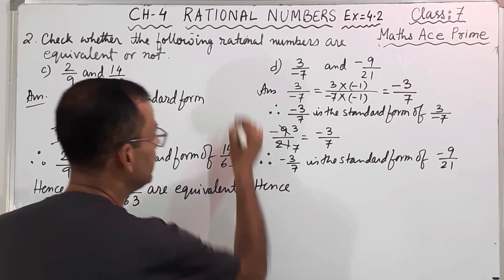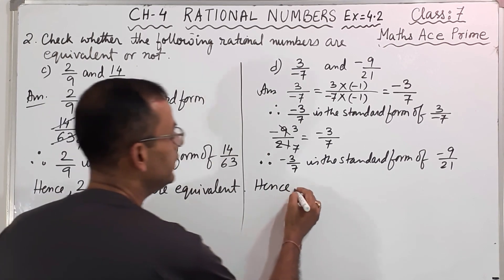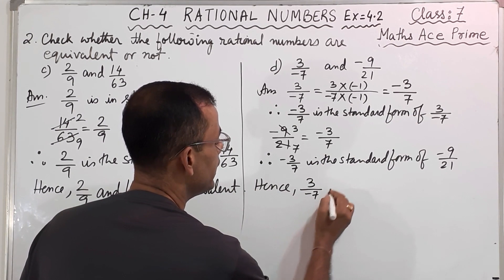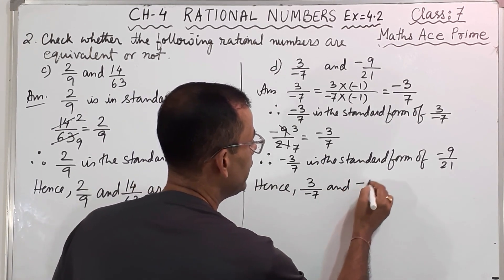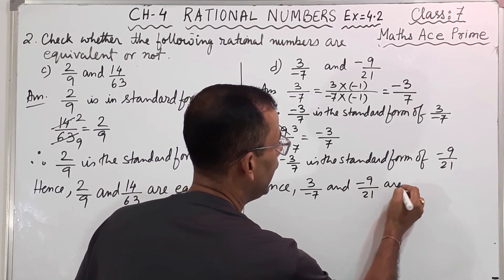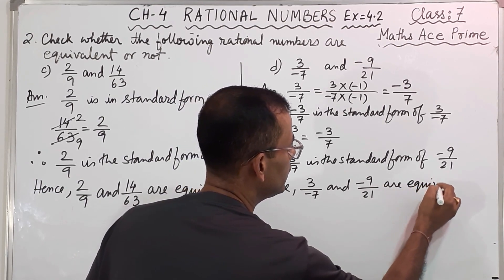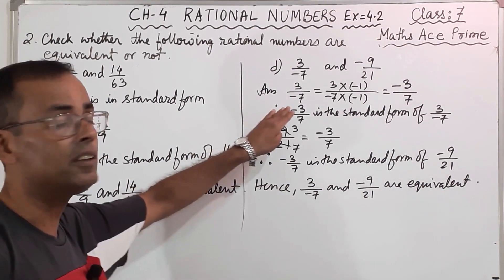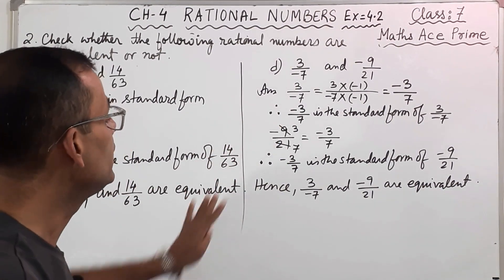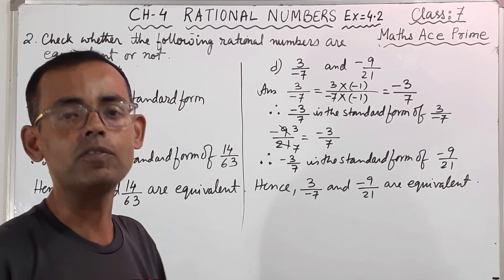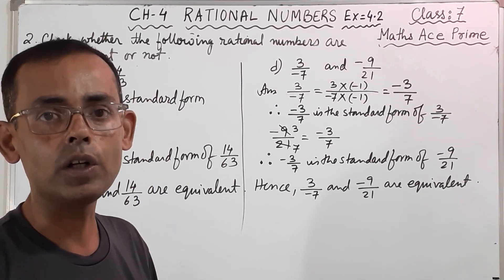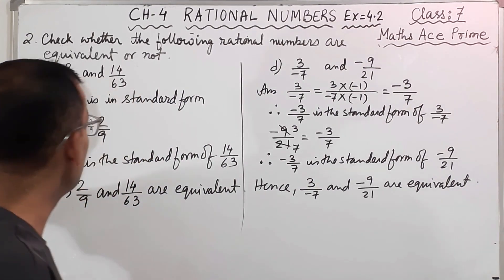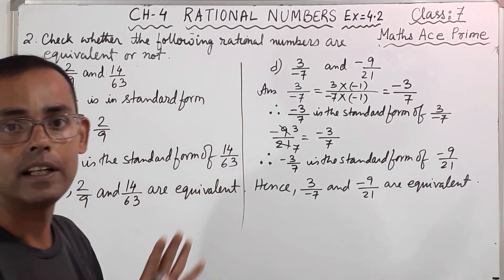Hence, 3 by minus 7 and minus 9 by 21 are equivalent. Remember: if the standard form is the same, then only it is equivalent. If the standard form is not the same, they are not equivalent. I hope you have understood these parts A, B, C, D nicely.